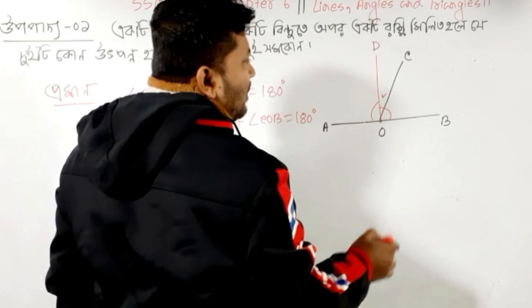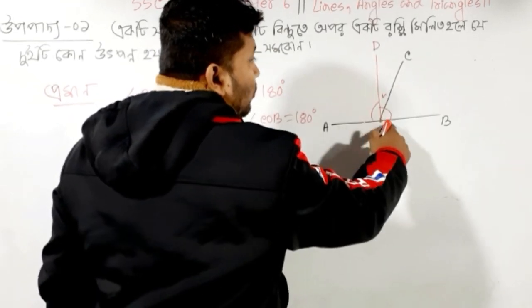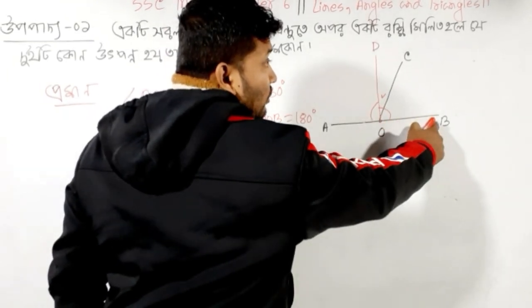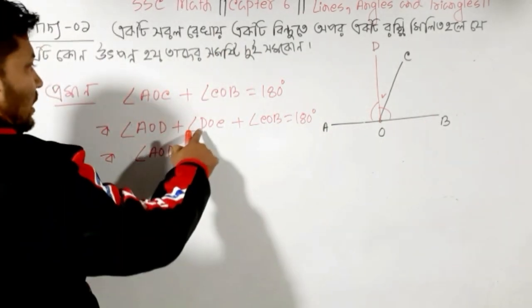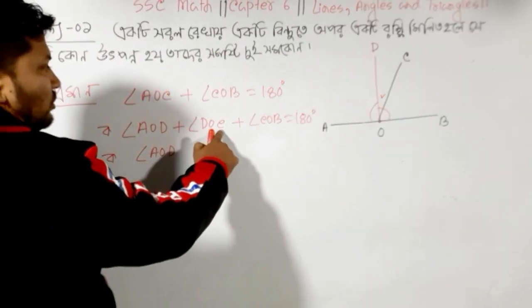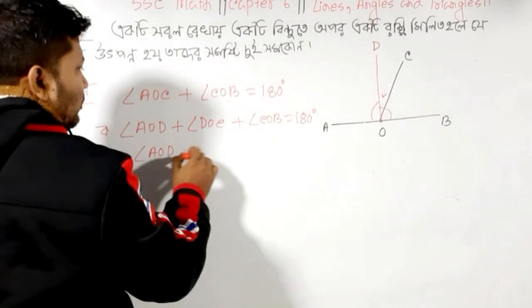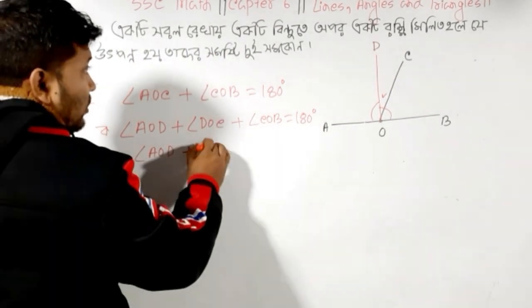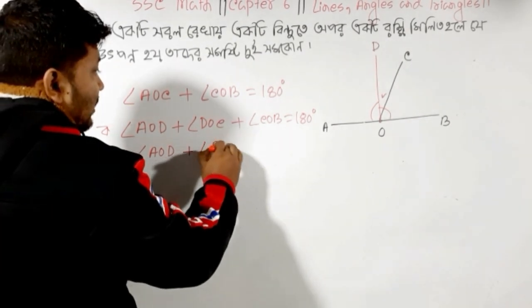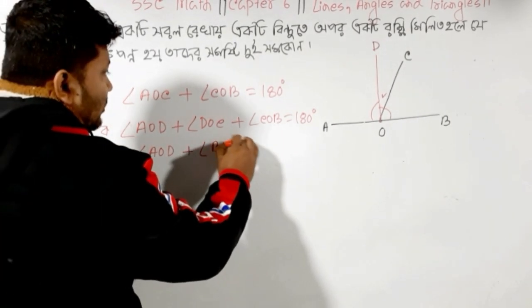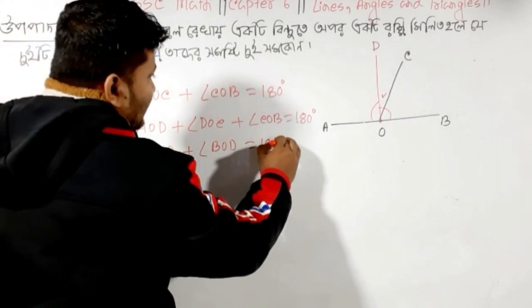If one writes A, of A. D, O. Or C. B, C, O, B, when we have to go, B, O, D, which is 180.